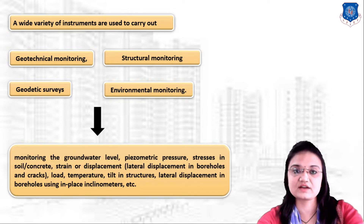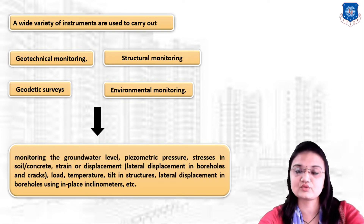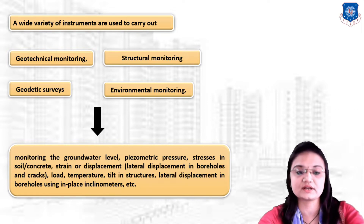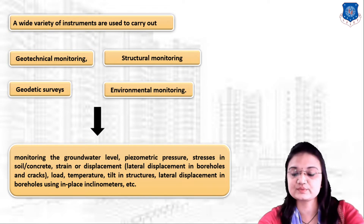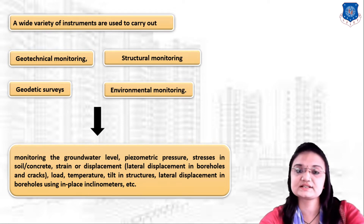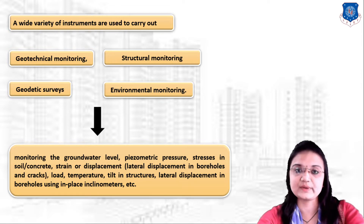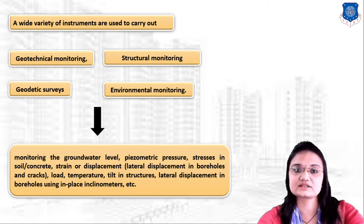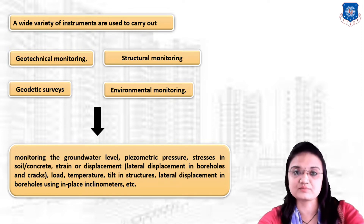We can use these types of instruments to monitor the ground water level, pneumatic pressures, traces in soil and concrete, measurement of strength and displacement, load, temperature, tilt in structures, and lateral displacement in walls. These are the physical parameters that we have to measure with the help of instruments. Let us understand in detail the different types of sensors and how we can use them in civil engineering to monitor these areas.